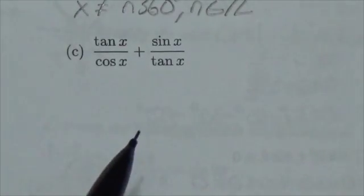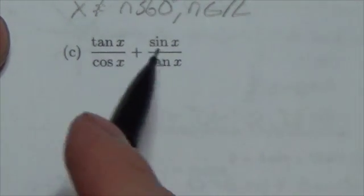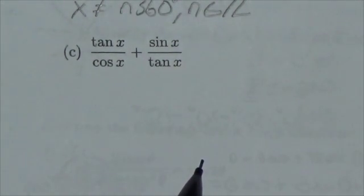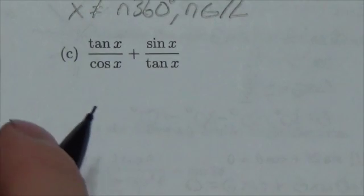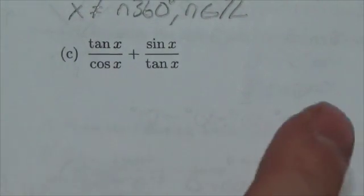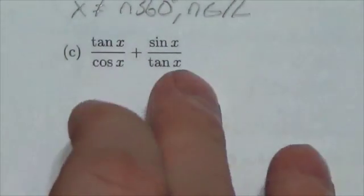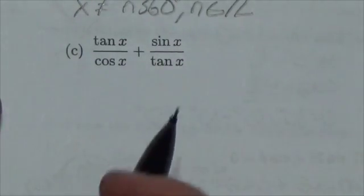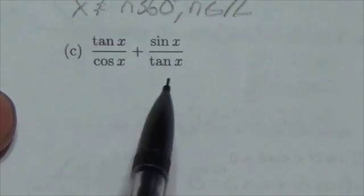That typically means looking for the denominator being set equal to zero. But not only that, we've got to remember that tangent, cotangent, cosecant, and secant all have their own set of non-permissibles as well, and in this particular example, we do have tangent showing up.